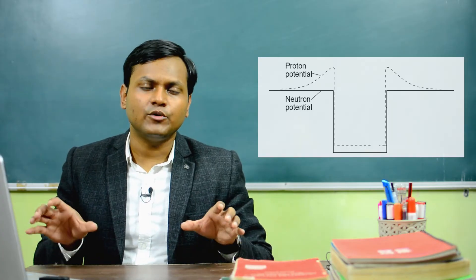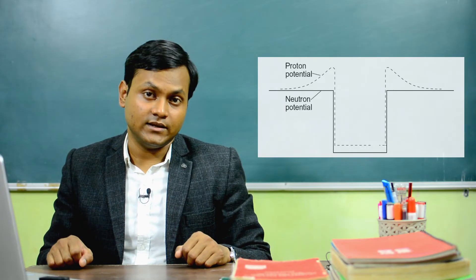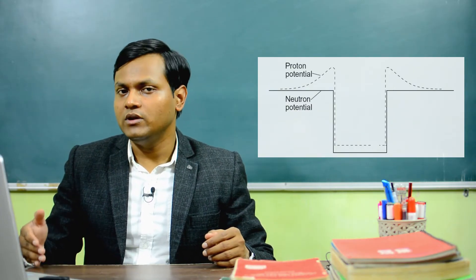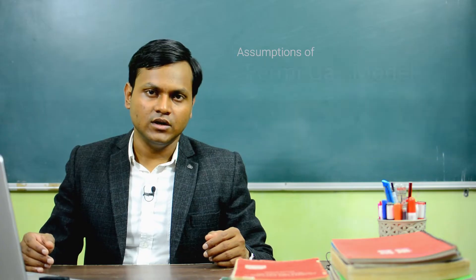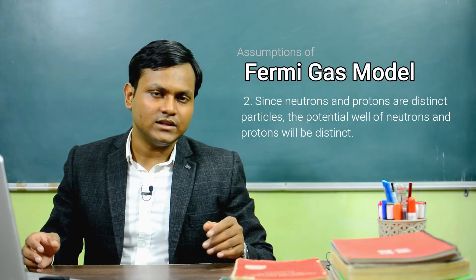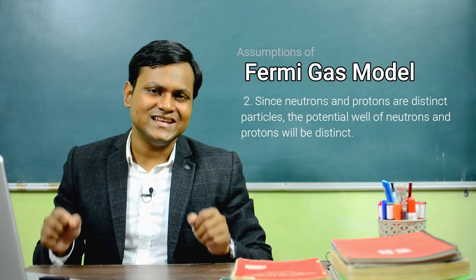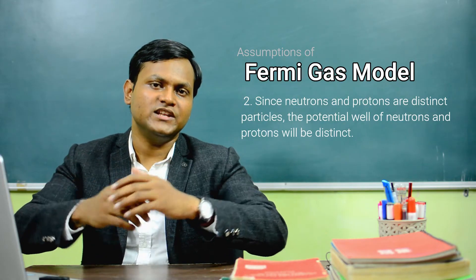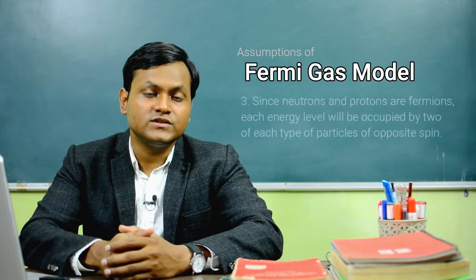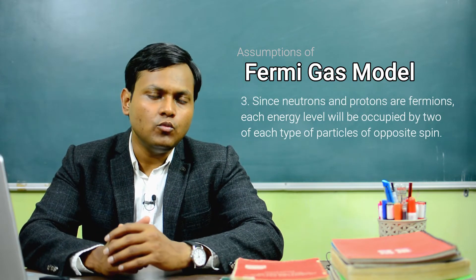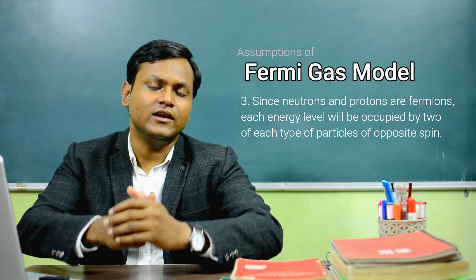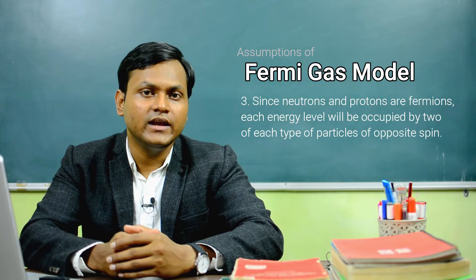Since neutrons and protons are fundamentally distinct particles, their potential wells are also distinct. Neutrons interact via the nuclear force alone, while protons interact via the nuclear force as well as Coulombic repulsion. Therefore the potential wells of neutrons and protons are different, and neutrons and protons occupy energy levels in their own separate potential wells. Since both are fermions, no more than two of each can occupy a given energy level.